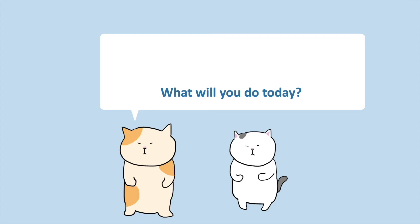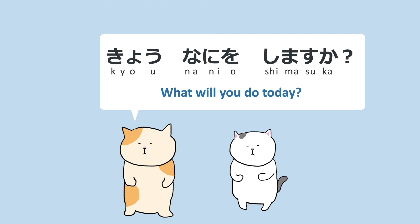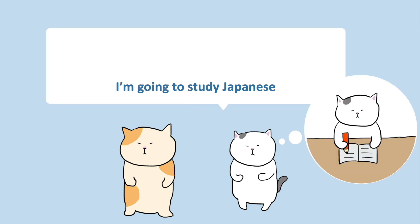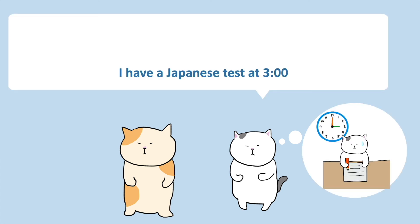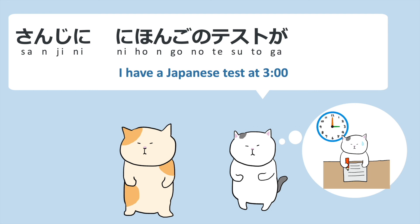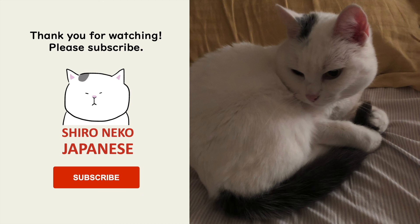Let's review the dialogue. 'What will you do today?' 今日何をしますか？ 'I'm going to study Japanese.' 日本語を勉強します。 'I have a Japanese test at 3.' 三時に 日本語の テストが あります。